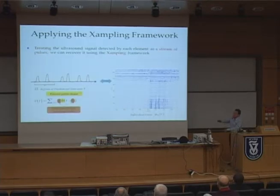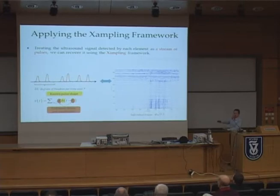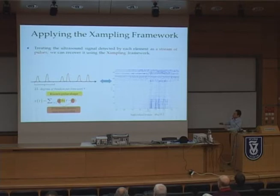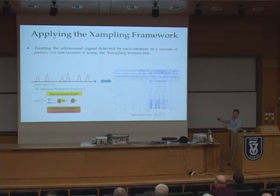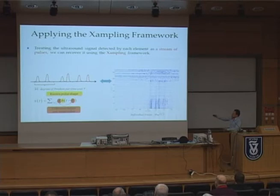Having observed that the signal structure comprises a relatively small number of pulses, we can characterize it by a relatively small number of parameters — specifically the delays of the known-shape pulse and the amplitudes accompanying those pulses. For this case, we have existing sampling frameworks that allow us to sample such signals from low-rate samples.